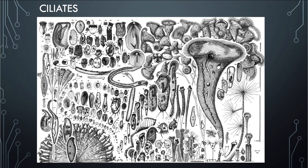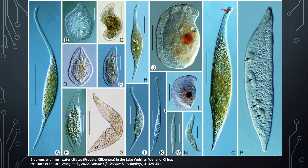Now let's look at ciliates. The diagram shows the enormous diversity of ciliates — it is absolutely mind-blowing, with ginormous diversity of these organisms. This image shows the biodiversity of freshwater ciliates from a single lake in China, where there are so many different types. The longer ones are reminiscent of the Loch Ness Monster; there's huge diversity in how they look, the different species, how they move, and everything about them.